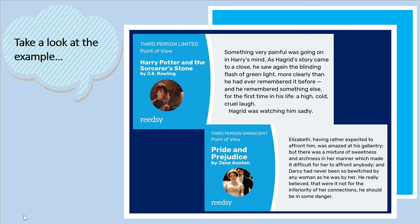For third person omniscient POV, an example is from Pride and Prejudice by Jane Austen: 'Elizabeth, having rather expected to affront him, was amazed at his gallantry. But there was a mixture of sweetness and artness in the manner which made it difficult for her to affront anybody.' This is third person omniscient — the narrator seems to know everything about the character Elizabeth.